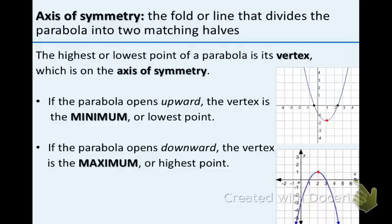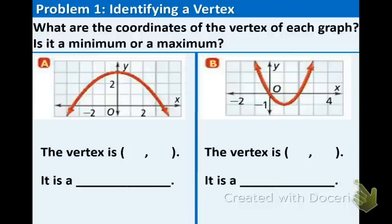Now we'll take a look at our first couple examples. What are the coordinates of the vertex of each graph? Is it a minimum or a maximum? In part a, we have a parabola opening down. The vertex is the point 0 comma 3. And because it is opening down, that vertex is the highest point, so it is called a maximum.